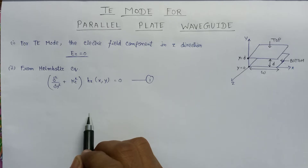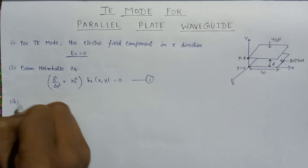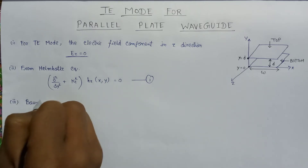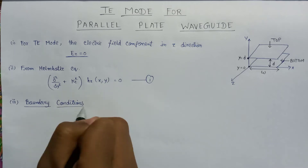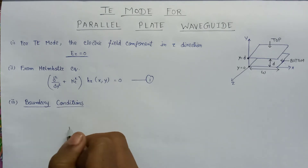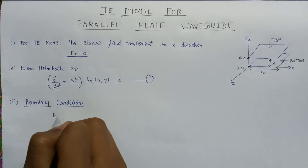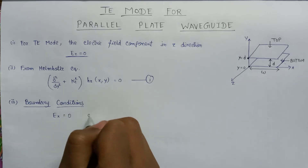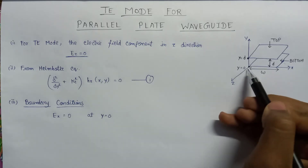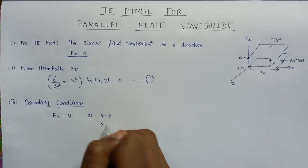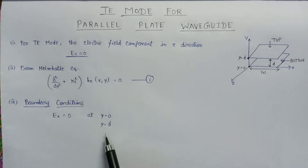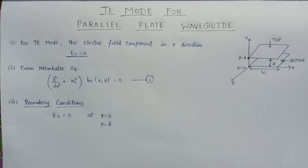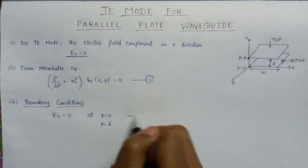Now let us have a look at the boundary conditions associated with TE mode. According to the boundary conditions, the component of the electric field in the x-direction, Ex, is always equal to zero when y equals zero — at the position of the bottom plate — and also at y equals D, the electric field component Ex is also equal to zero. These are the two boundary conditions. We will apply these on the general solution of the Helmholtz equation, which we call equation number 2.